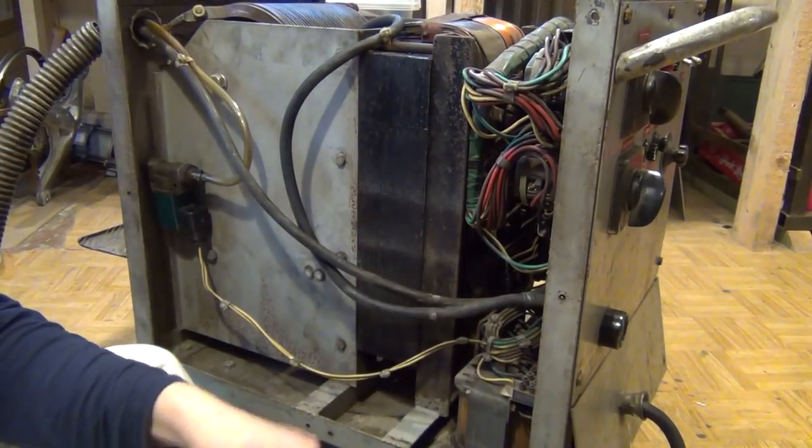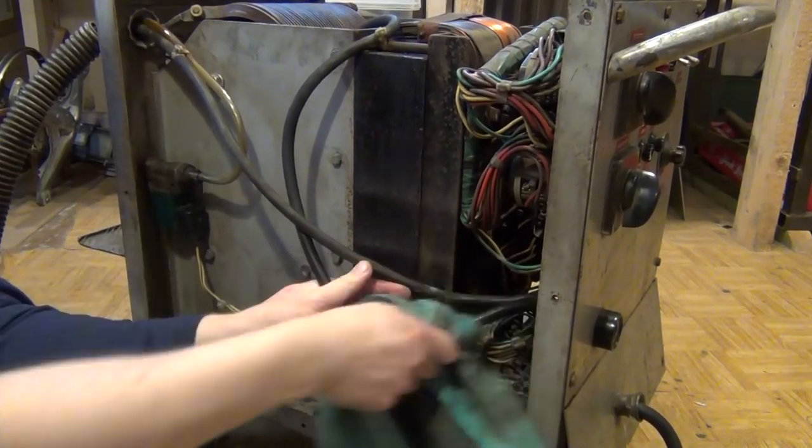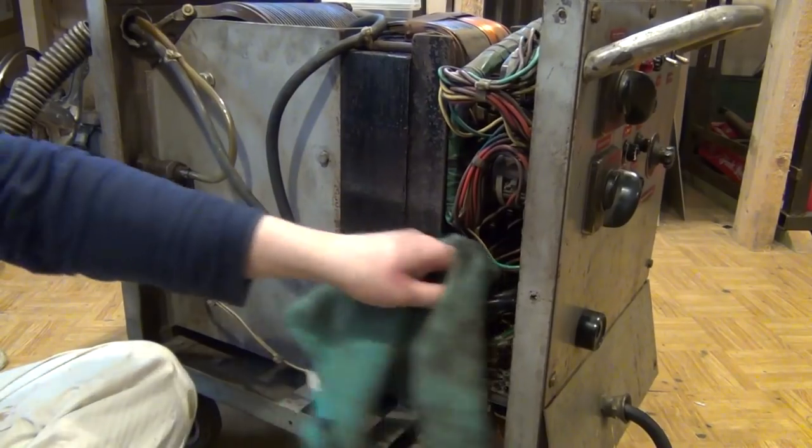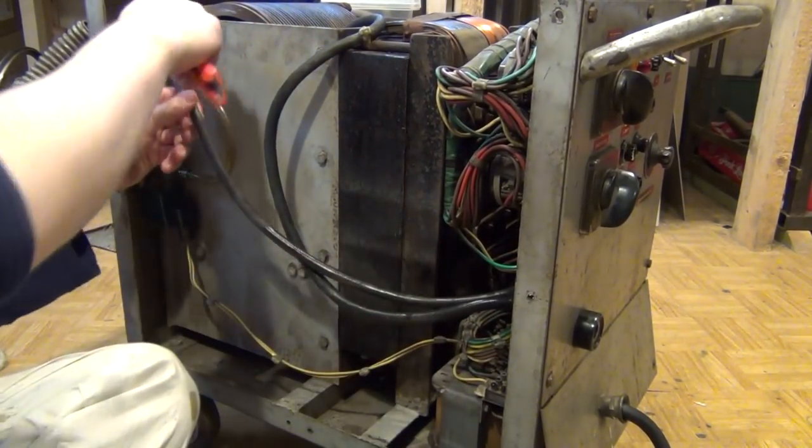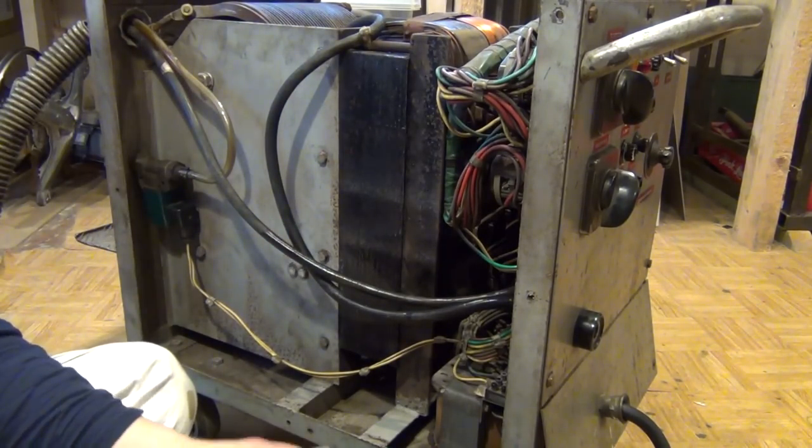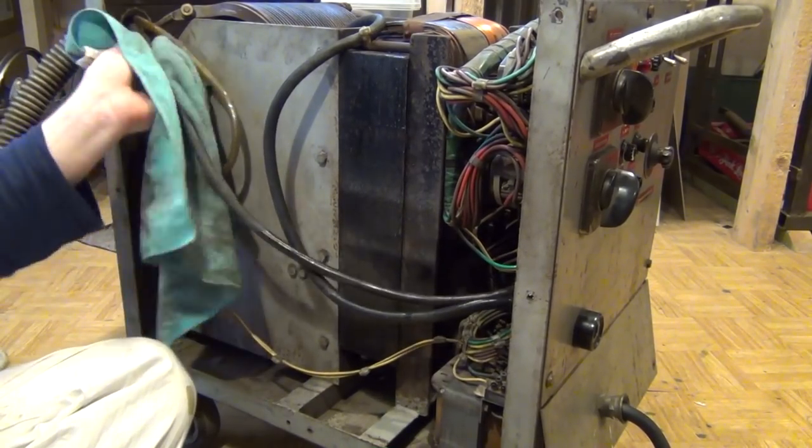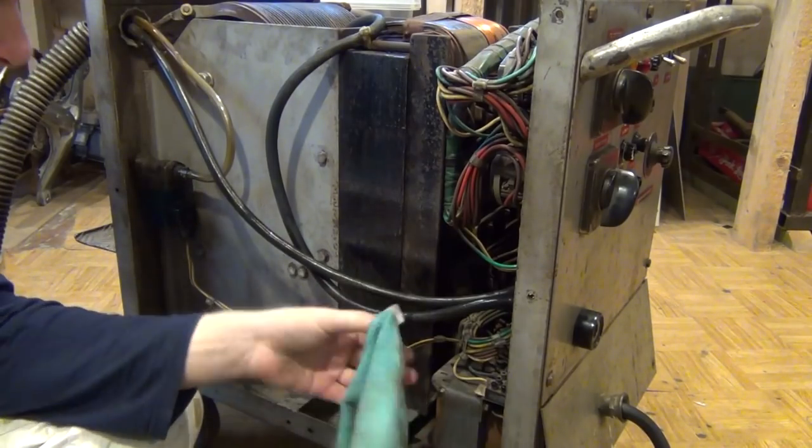So the next thing for me to do now was to take apart the entire current source. And that meant to take out all the different components from inside this enclosure, use the opportunity to clean these parts, make some measurements and figure out how it's all working together. And I'm now going to show you the different components and then after that I'm going to show you a circuit diagram explaining how they all work together.